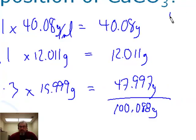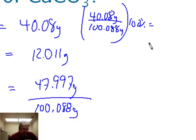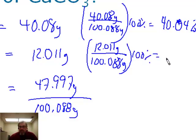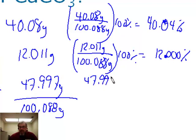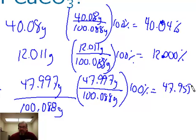For the percent composition: calcium is 40.08 divided by 100.088 times 100, giving 40.04%. Carbon is 12.011 divided by 100.088 times 100, giving 12.000%. Oxygen is 47.997 divided by 100.088 times 100, giving 47.955%.